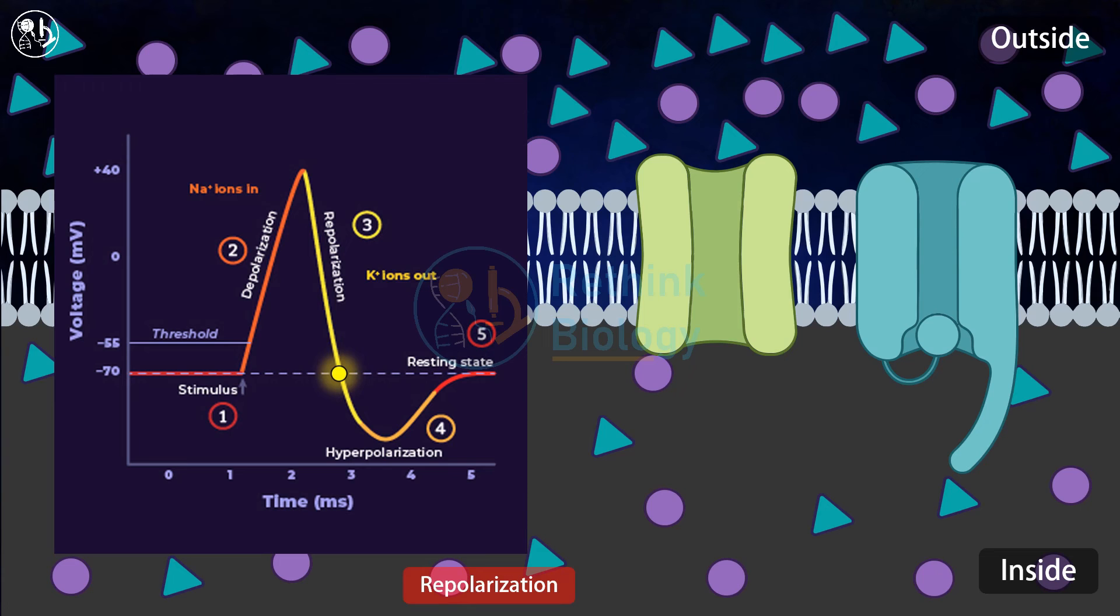The fifth stage is the undershoot stage or the hyperpolarized stage. During this stage, the sodium channels remain closed but some of the potassium channels remain still open. The membrane potential temporarily becomes more negative, about minus 90 millivolt, than the resting state.